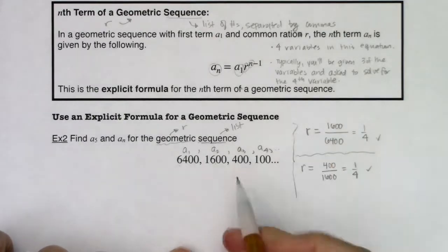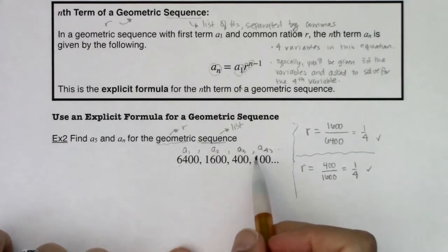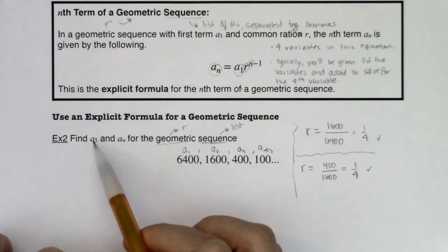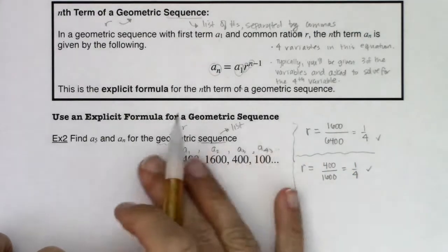I'm seeing that fraction of 1 fourth again. So this is checking out. Now let's see. If I do 400 and I divide it by 4, and again dividing by 4 is like multiplying by a fourth, I can see that I am going to get to 100.